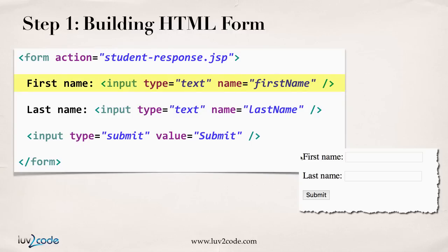Next, we set up our text fields for first name and last name. For a text field, we have input type equals text, and we give it name equals firstName. That name is very important — we'll need that name on the server side. We do a similar thing for last name.